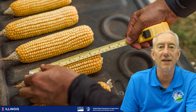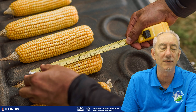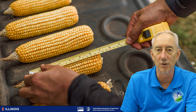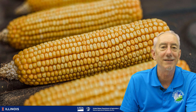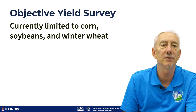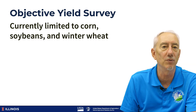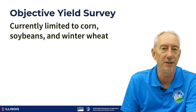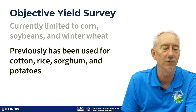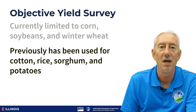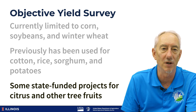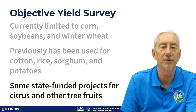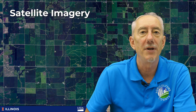For corn, we count stalks and ears, and we measure the length of the ears. We measure the kernel row, not the length of the cob. At the dent stage of the corn crop, we send ears to our lab in St. Louis for moisture content and shelling fraction analysis. The Objective Yield Survey is currently limited to corn, soybeans, and winter wheat. Previously, it has been used for cotton, rice, sorghum, and potatoes, and there are also some state-funded projects for citrus and other tree fruits and nuts.